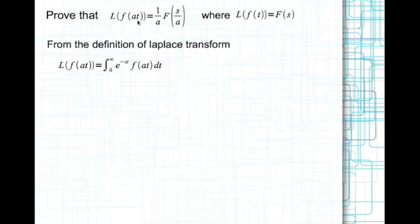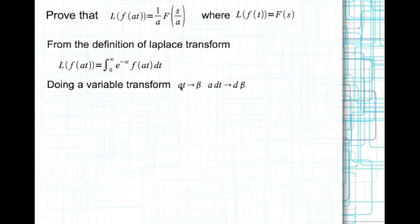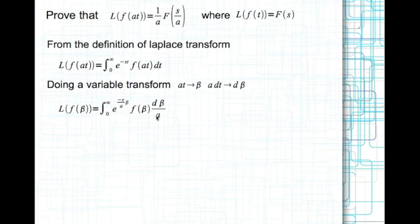To prove this, start from the basic definition of Laplace transform and perform a variable substitution. Let a*t equal beta, so differentiating gives a*dt equals d-beta. Since a is a constant scalar, replace a*t with beta, so t is beta/a and dt is d-beta/a. Substituting, the exponent becomes e to the power of minus s times beta/a, and f(at) becomes f(beta), with dt replaced by d-beta/a.